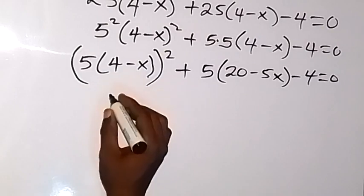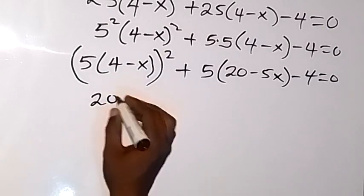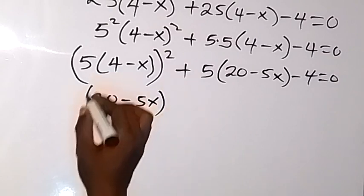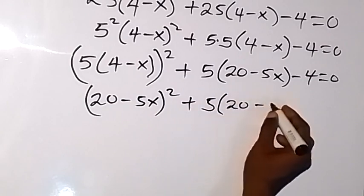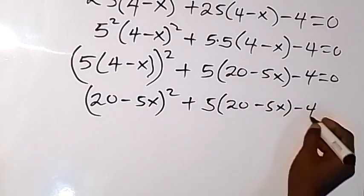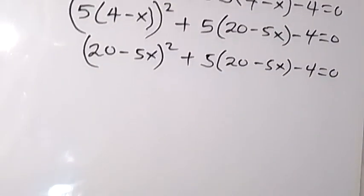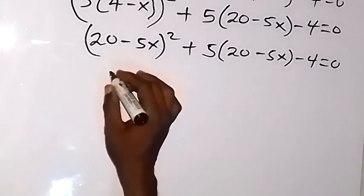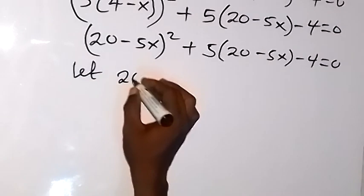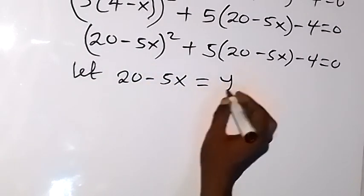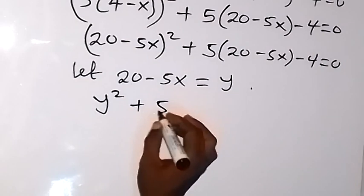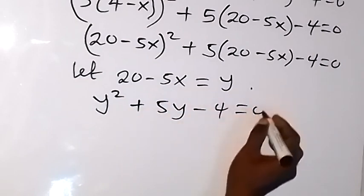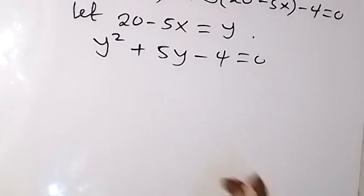From here this becomes 20 minus 5x squared, then plus 5 into bracket 20 minus 5x, minus 4 equals to 0. You can see this looks like a quadratic equation. Let 20 minus 5x equal to y, so that this equation becomes y squared plus 5y minus 4 equals to 0.